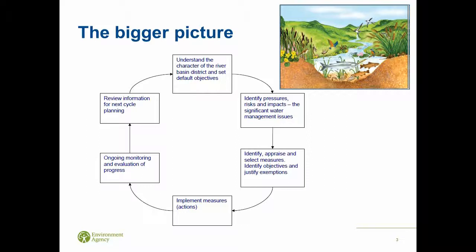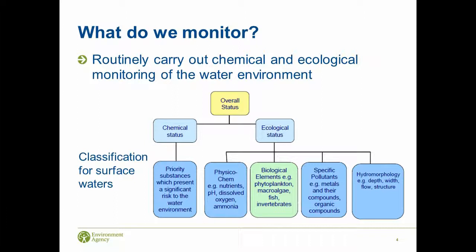We routinely monitor a number of chemical and ecological elements and that helps us in classification - it helps tell us what condition the water environment is in and what status it is. We have an overall status generally split into two areas: chemical status and ecological status. Chemical status mainly refers to priority substances, works on a pass and fail basis, and isn't monitored in every single water body, unlike ecological status which covers all the different elements and is monitored in every water body.